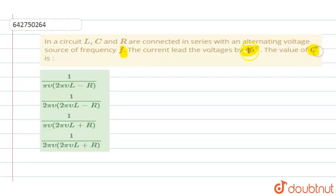So in a L, C, R series circuit, they are saying that the source has a frequency F, the current leads the voltage by 45 degrees, which means that the phase difference phi will be equal to 45 degrees, and in this condition you have to find the value of C.